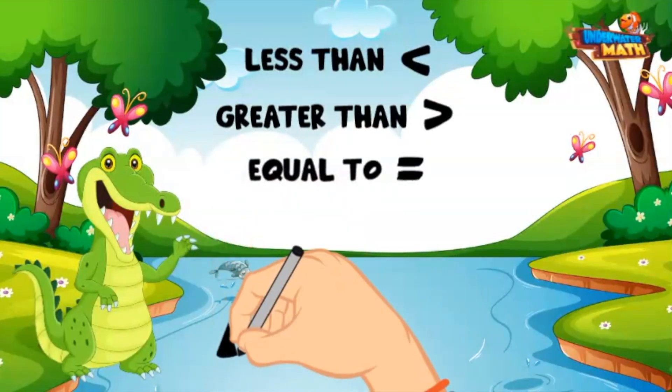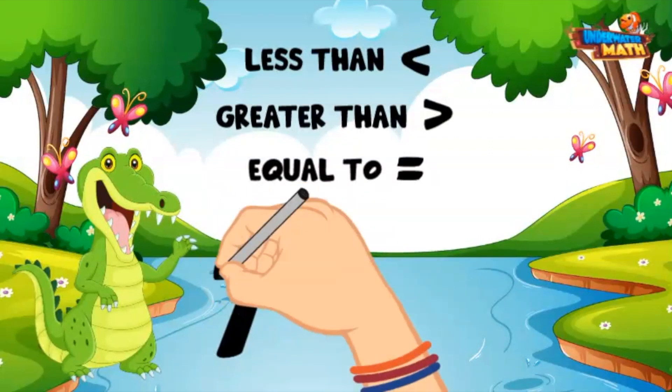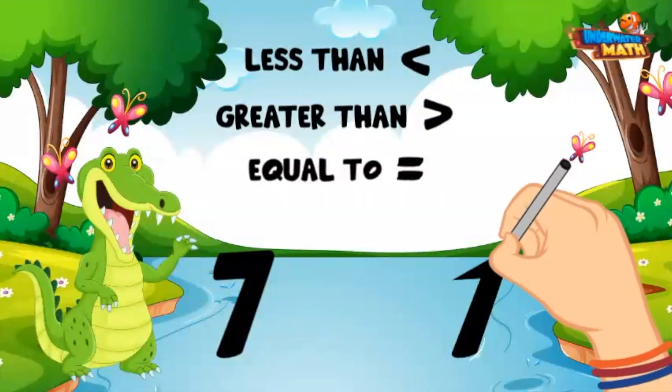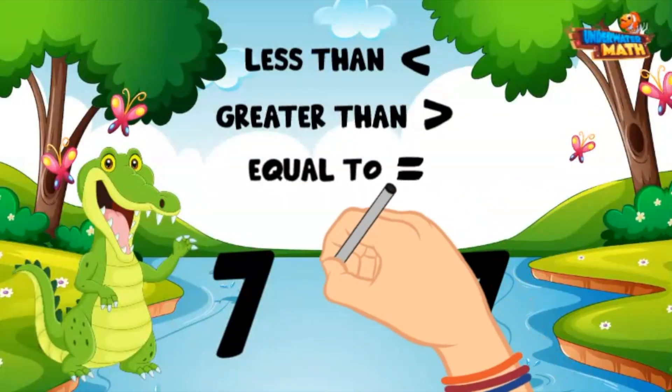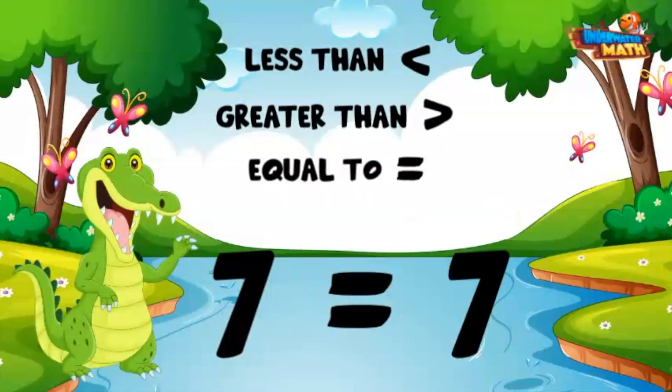The last symbol we have is equal to. If two numbers are exactly the same, like 7 and 7, we can show they are equal by putting the equal to symbol in the middle.